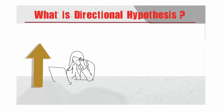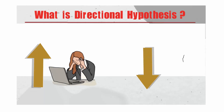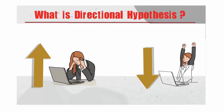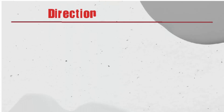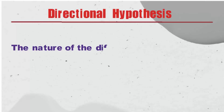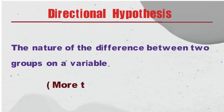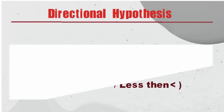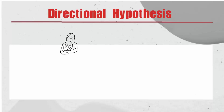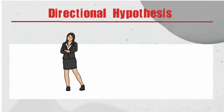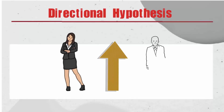In this example, you can see there is a clear direction of the relationship shown, so it is a directional hypothesis. We can also say that a directional hypothesis can be defined as one where the nature of the difference between two groups on a variable — more than or less than — is postulated. For example, women are more motivated than men. In this example, the nature of the difference between two groups on a variable is postulated, so it is a directional hypothesis.